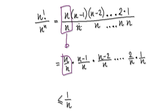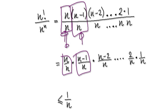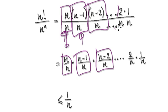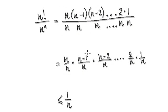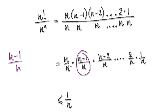So this bit here is this fraction here. You've got this fraction multiplying with this fraction, which is this one here. And then here you're multiplying with another fraction and so on. So realize that n minus 1 over n would be less than 1, so this fraction here is actually less than 1.